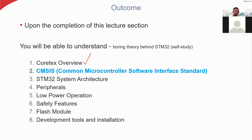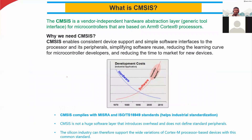We will move to the next topic, which is CMSIS — the Common Microcontroller Software Interface Standard. This is an important international standard. CMSIS is a vendor-independent hardware abstraction layer, which we shortly call HAL — H-A-L.